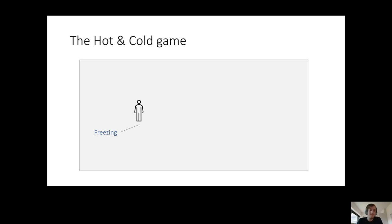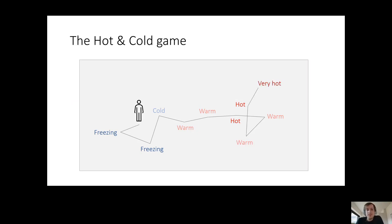Cold means you're far away and hot means you're very close. You start going around and maybe in some place you get feedback that you're a little bit less cold, so you start going in that direction and it gets warmer and warmer. When it starts getting warmer, maybe you go back a little bit, wiggle around, and eventually find what you're looking for. Obviously, you're not going on a straight path to your goal because you don't know where it is, but just because you get this feedback on whether you're getting better or worse, you can adjust and eventually end up finding what you're looking for.